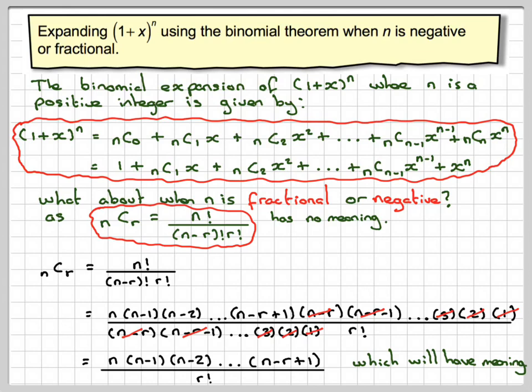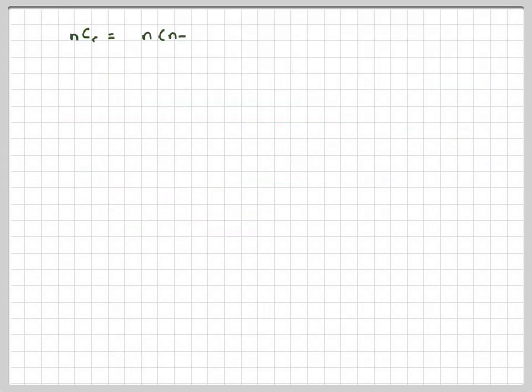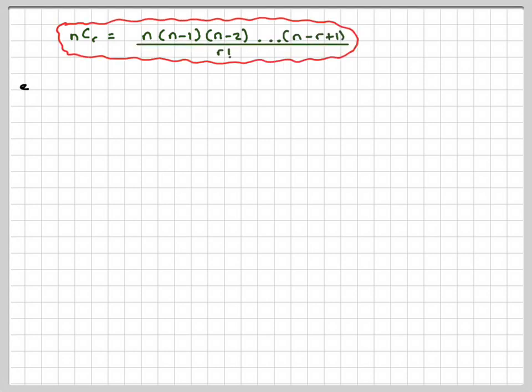Which will have a meaning if n is fractional or negative. So we've got nCr is now equal to that. Let's just have a look at a few cases.